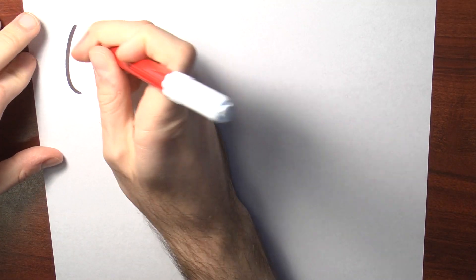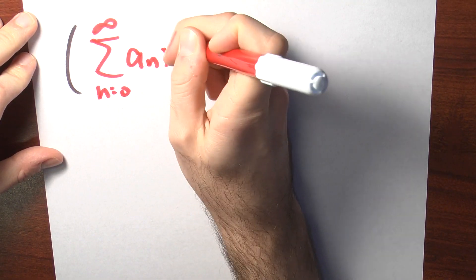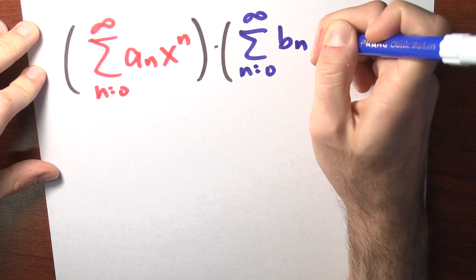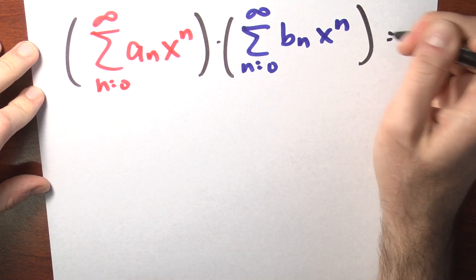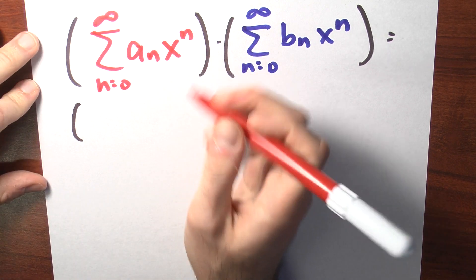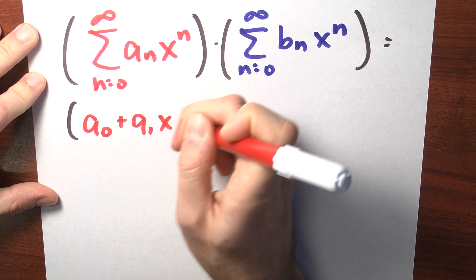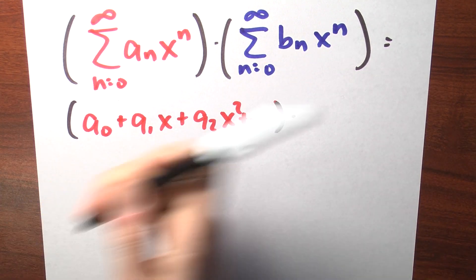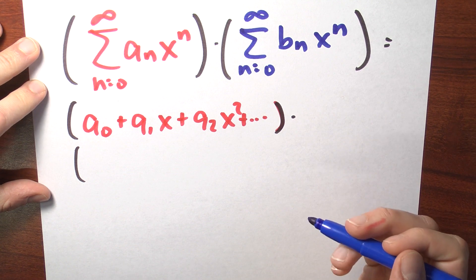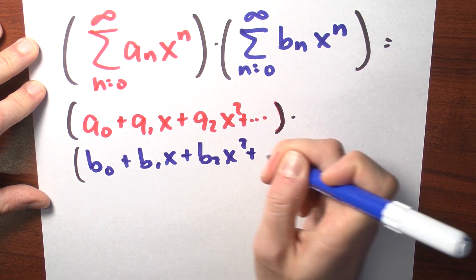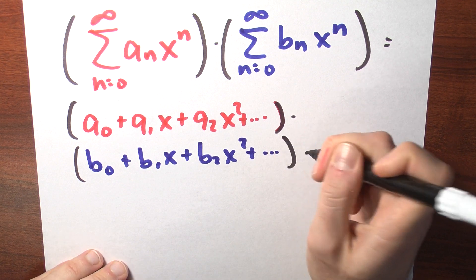We can also multiply power series. Suppose I want to multiply the sum n goes from 0 to infinity of a sub n times x to the n by another power series — maybe the sum n goes from 0 to infinity of b sub n x to the n. One way to get started is to just expand these out, write out the first few terms: a sub 0 plus a sub 1 x plus a sub 2 x squared, and it keeps going. Then I multiply that by b sub 0 plus b sub 1 x plus b sub 2 x squared, and it keeps going.